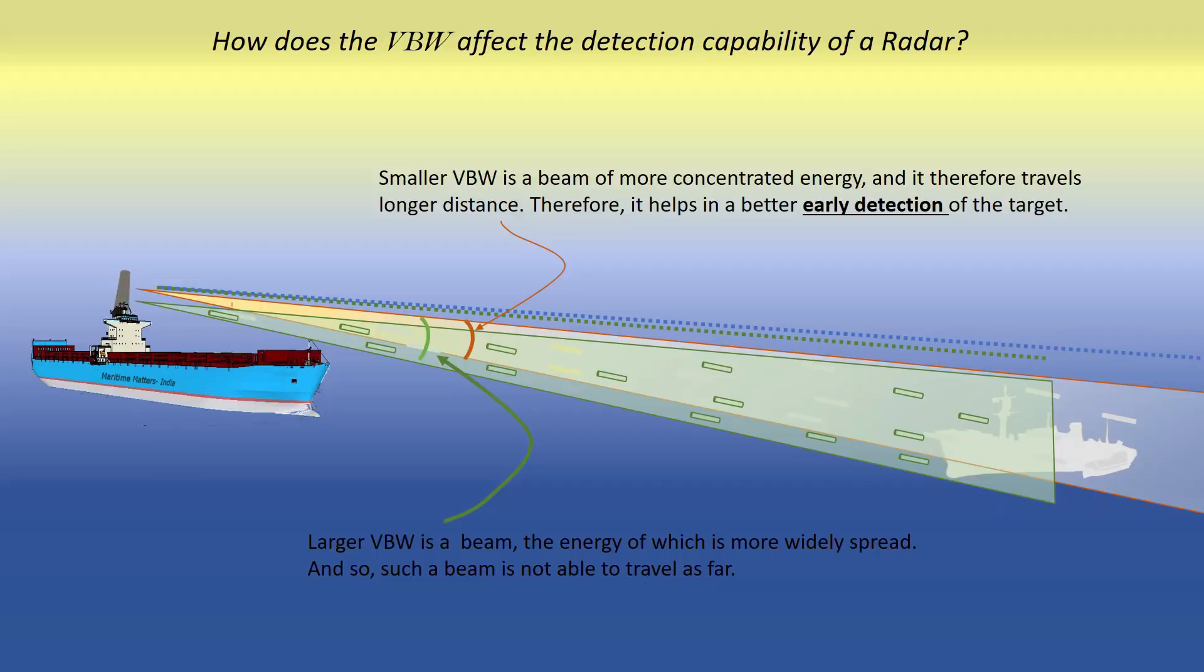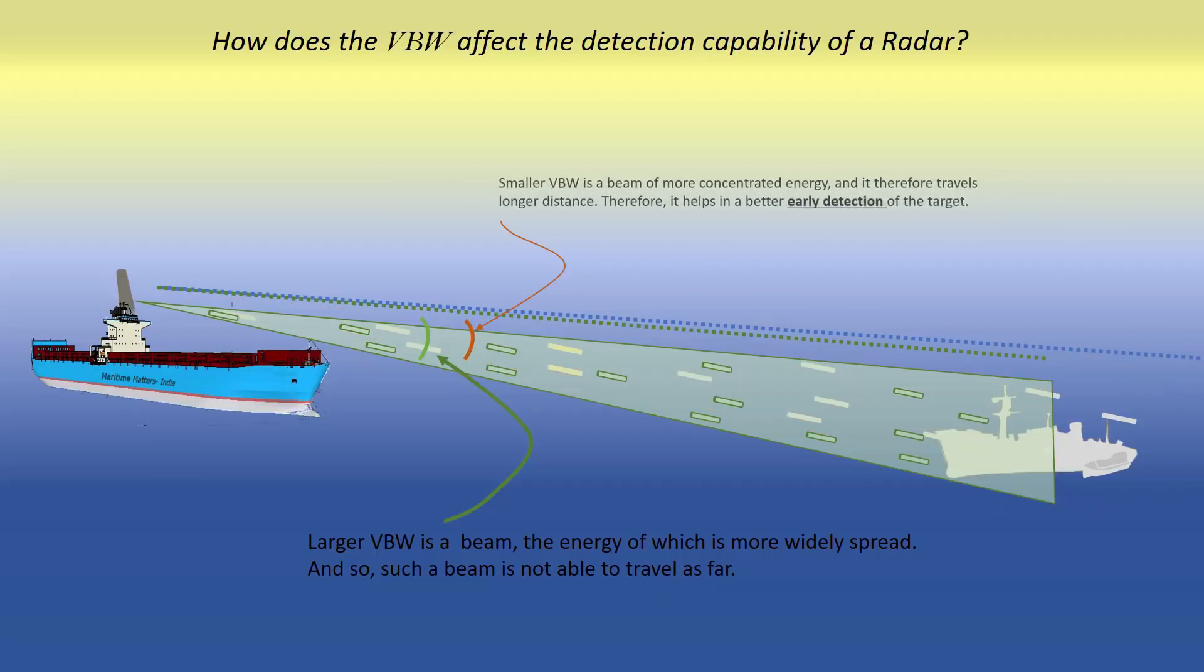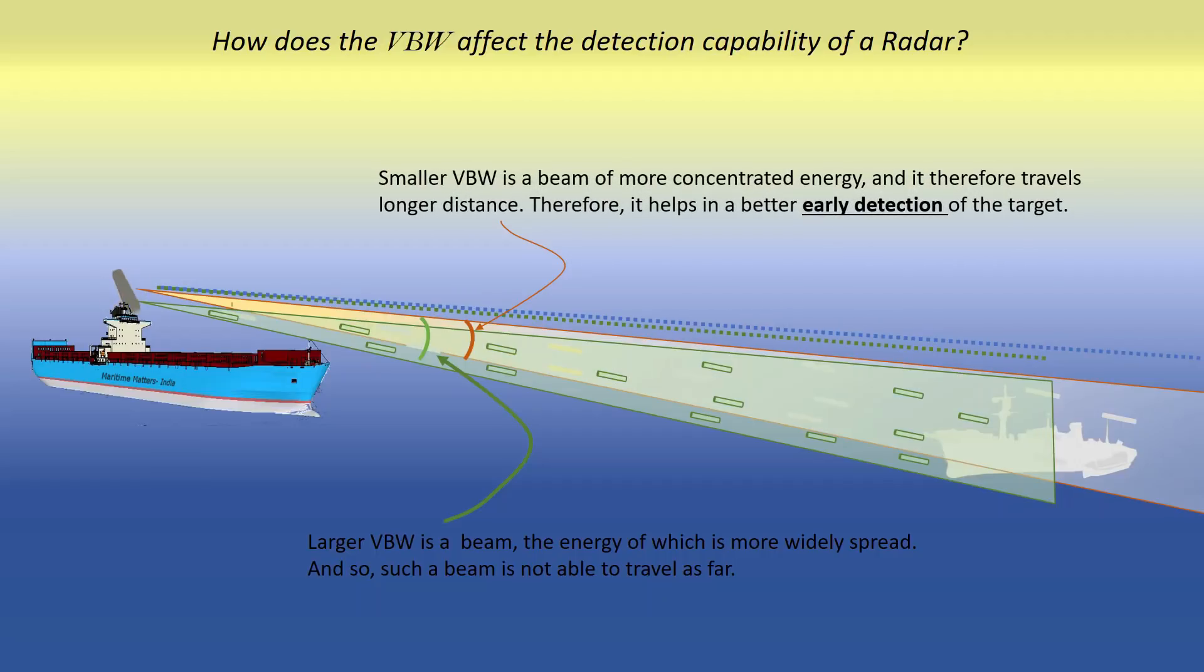A beam of smaller VBW is a more concentrated beam, and so it is able to travel longer distance than a beam of larger VBW.